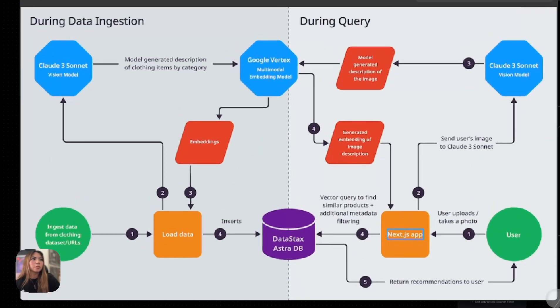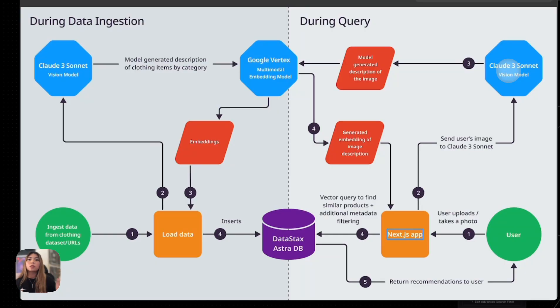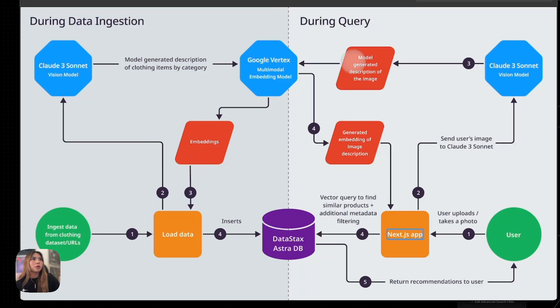The flow itself looks something like this for the image flow. When the user uploads a photo to the application, the image is sent to a vision model. The vision model accepts the image and converts it into a textual description based on what you've prompted the model to look for — this is where prompt engineering comes in. For example, I told the vision model to only pay attention to clothing items in the image and ignore anything in the background. Otherwise, if it sees a tree or a building, it's going to describe those and mess up the search. We're only focusing on the clothing.